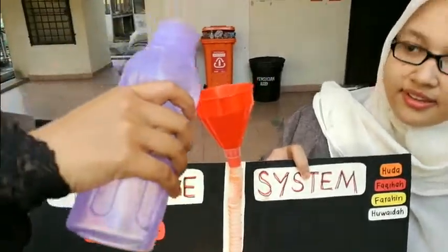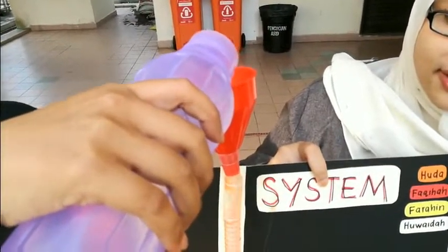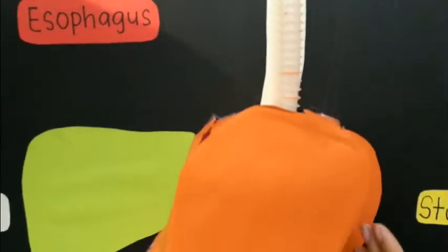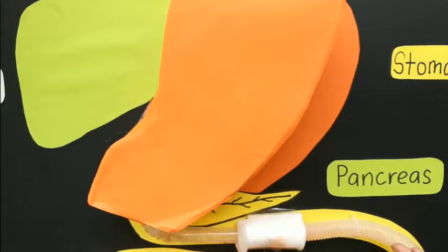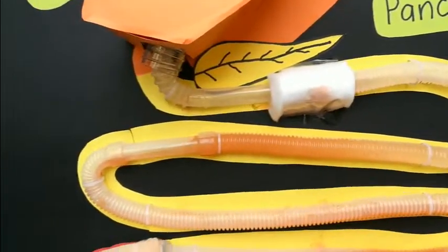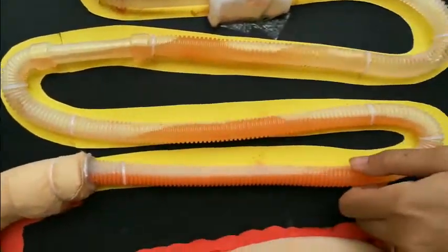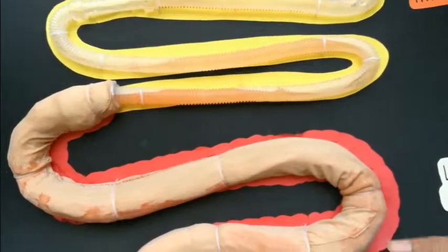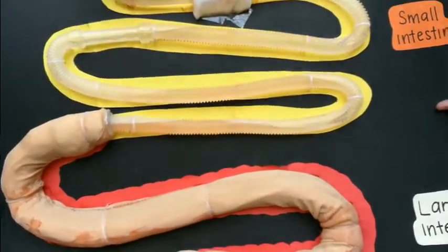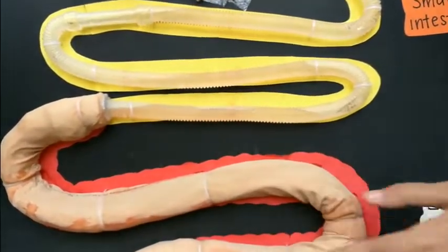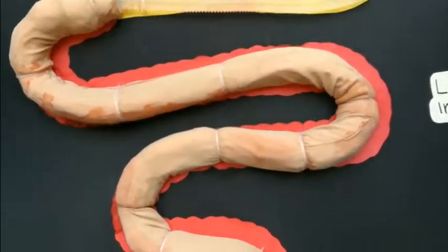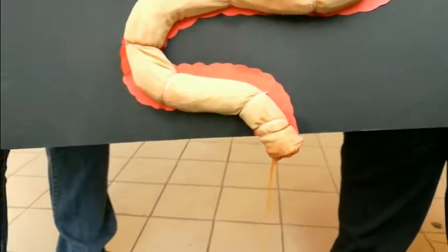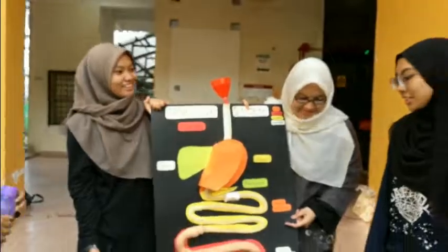We are going to demonstrate how this system works by pouring water through the mouth, which is the funnel. The water will start to flow from the mouth to the esophagus, to the stomach. You can see the water flows and it reaches the large intestine — this is when reabsorption occurs, in which the holes will leak and the cotton will be wet. Finally, the water comes out from the anus. We could see that this person is having diarrhea.